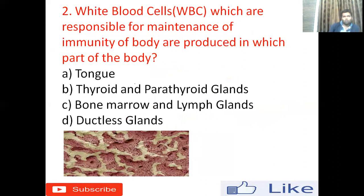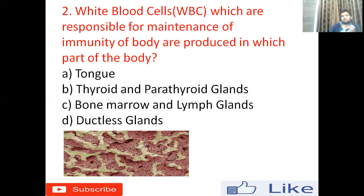Second question: White blood cells (WBCs), which are responsible for the maintenance of immunity in the body, are produced in which part of the body? Option A: tongue, option B: thyroid and parathyroid glands, option C: bone marrow and lymph glands, option D: ductless glands. White blood cells are like the soldiers of our body — they build our immunity and fight against foreign particles.